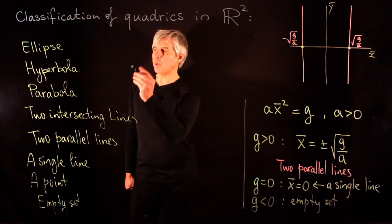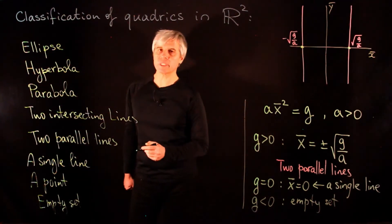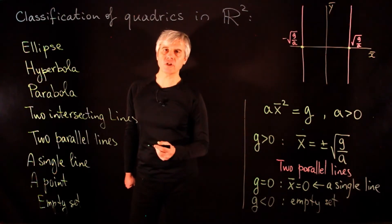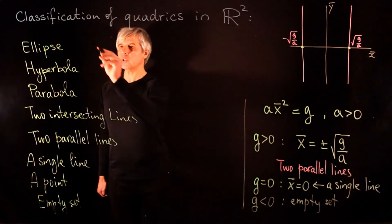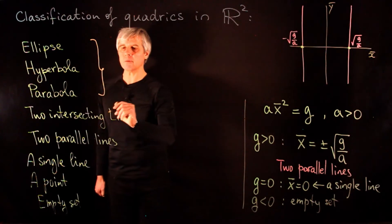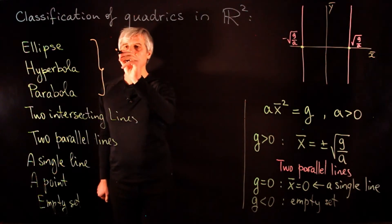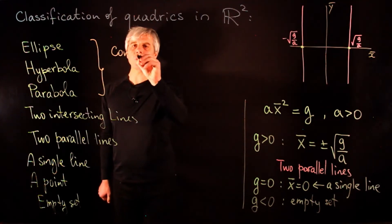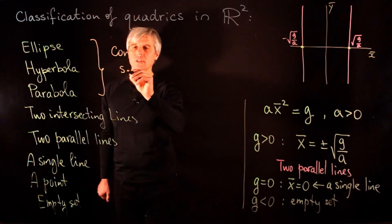Summarizing, the classification of quadrics in R2 includes: an ellipse, a hyperbola, a parabola, two intersecting lines, two parallel lines, a single line, a point, or an empty set. These are the possible solution sets for a quadratic equation in two variables. The first three cases are the most interesting and are also known as conic sections.